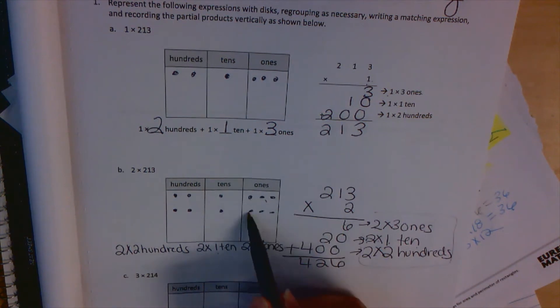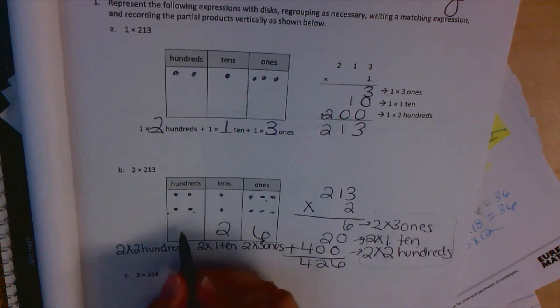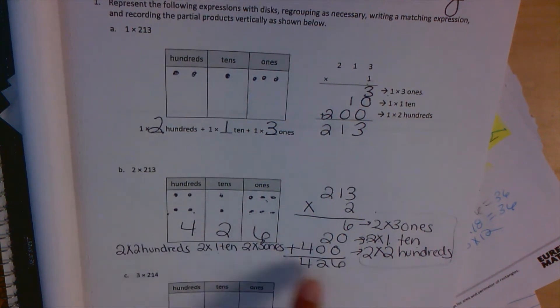Here we have 1, 2, 3, 4, 5, 6 ones. 1, 2 tens. 1, 2, 3, 4 hundreds, which matches the answer we thought, as it should. 2 times 213 is 426.